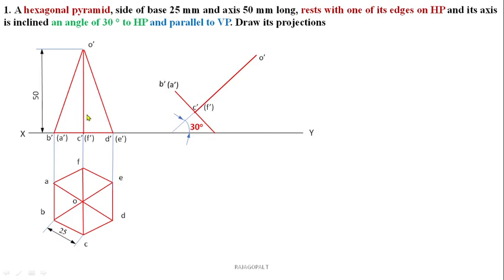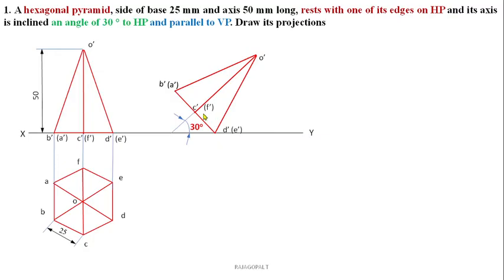This is the simple position front view. After the completion of this simple position, reproducing the simple position front view in step number three, you can extend the projectors from this front view as well as from this top view — step number two and three — and both respective corners will meet at one point. For example, corner A — A and E lie on the same projector.